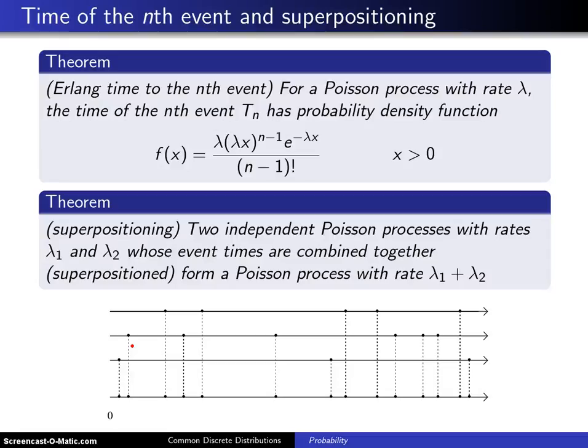Now, as alluded to earlier, there are a number of theorems that would be proven in a stochastic processes class, but instead here are two of them that are simply going to be stated that are used when working with Poisson processes.